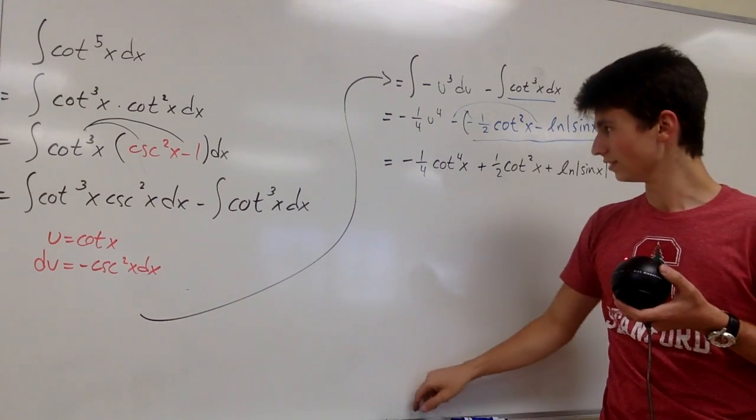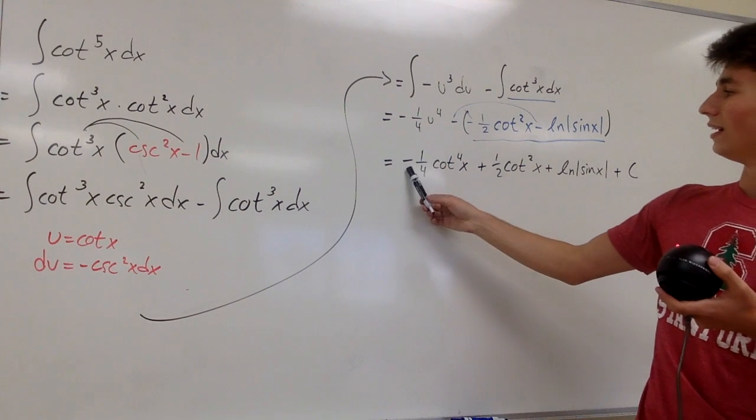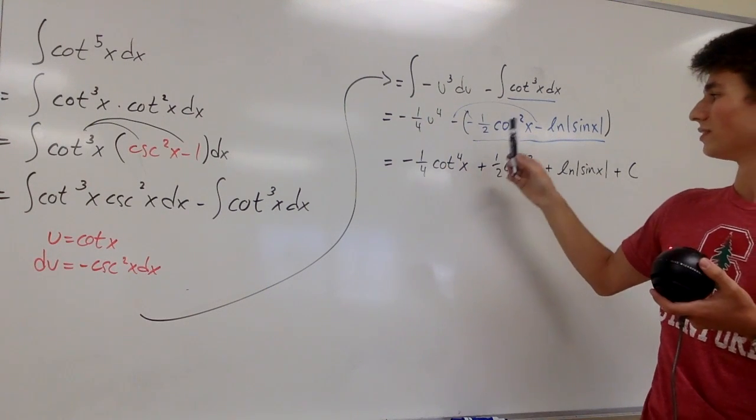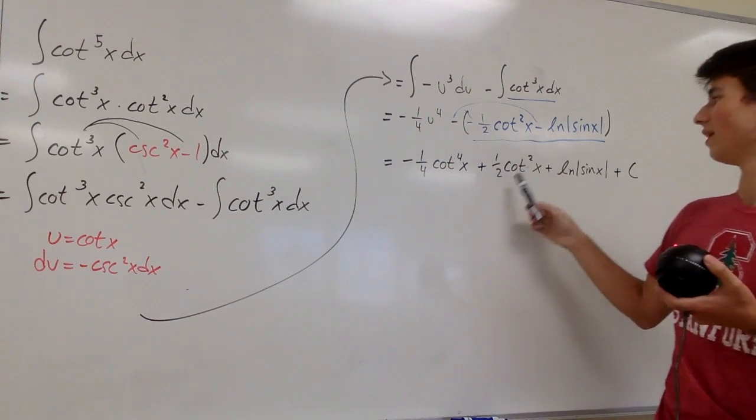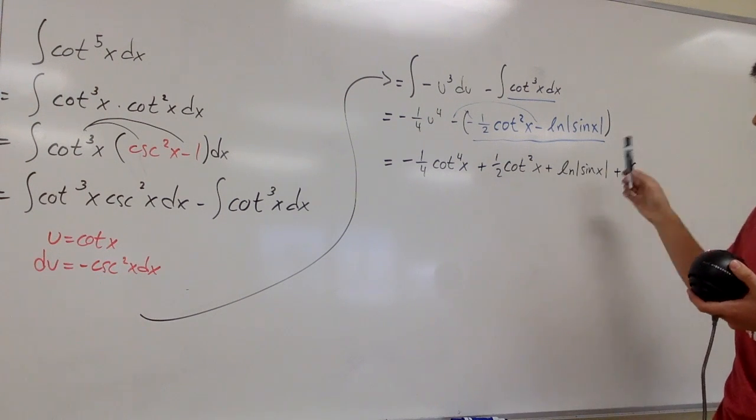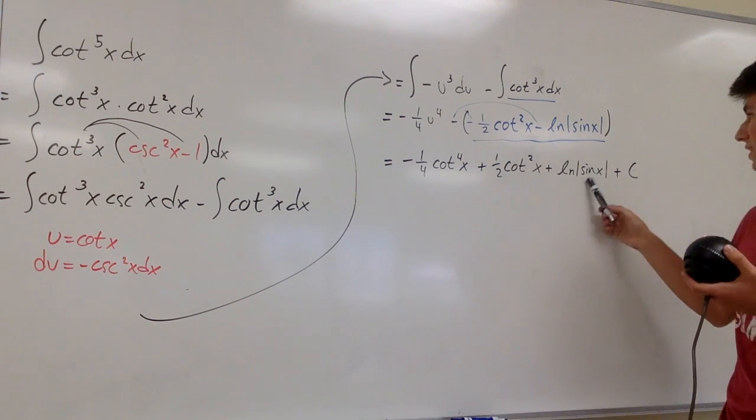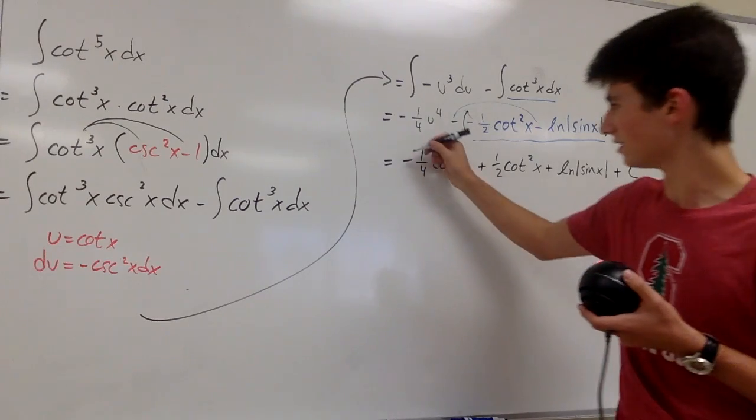And so our final answer is negative one-fourth cotangent to the fourth of x plus one-half cotangent squared of x plus the natural log of the absolute value of sine of x plus c because it's indefinite.